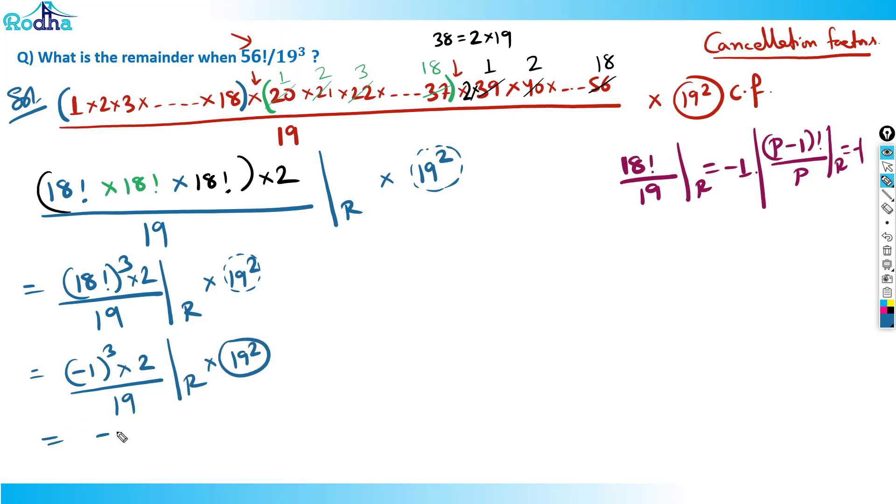If this remainder is minus 2, in terms of positive remainder, minus 2 by 19, when remainder of minus 2 will come, its positive remainder must be 17. So now this part remainder is actually 17, and then into 19 square. So now it's like 361×17, that is 6137. So 6137 is the answer to this question. This is the funda behind this, I hope it is clear to everyone.